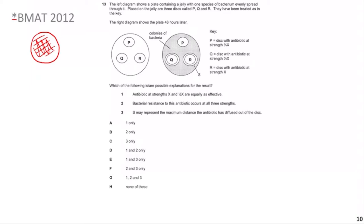In this type of experiment, you dip a circular disc in antibiotic, place it on the plate, and the antibiotic diffuses outward from the disc. Where it kills bacteria, a clear ring forms around the disc. The three discs P, Q, and R contain the same antibiotic with concentrations doubling each time: quarter-x, half-x, and x. The question asks which statements are possible explanations for the results shown after 48 hours. Pause the video and attempt the question.